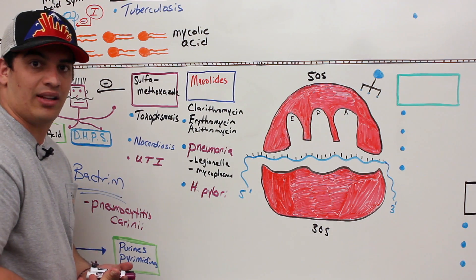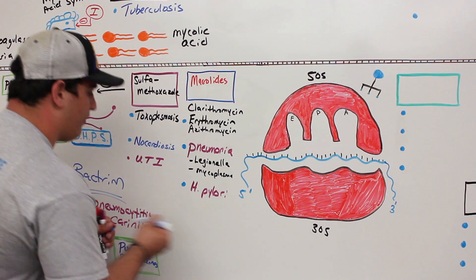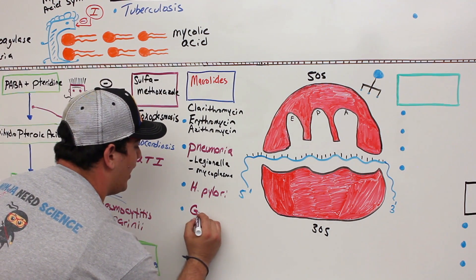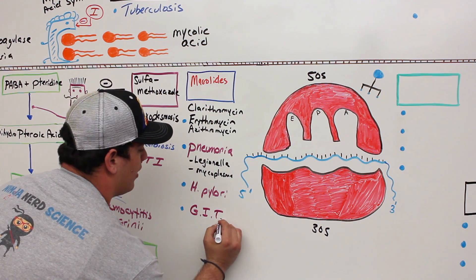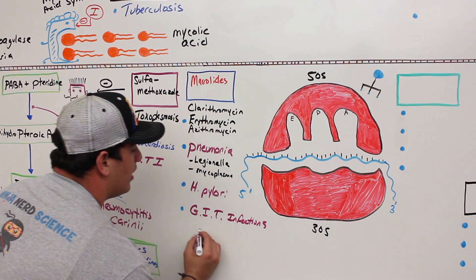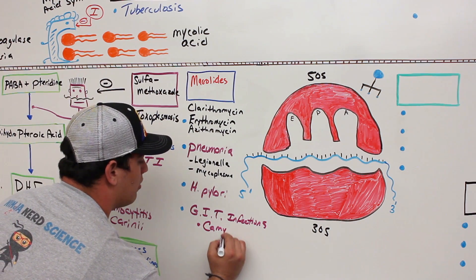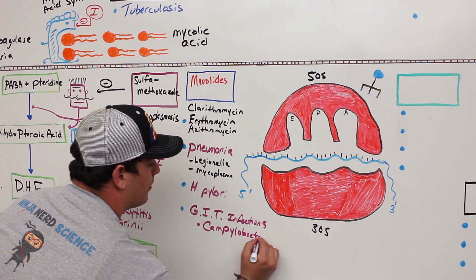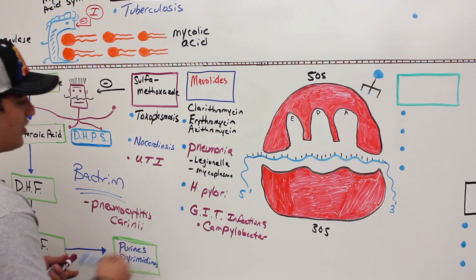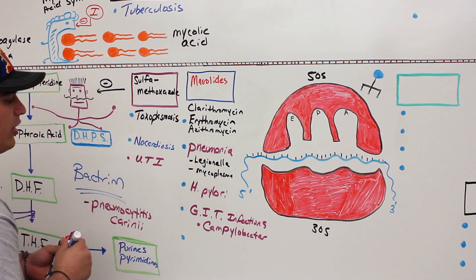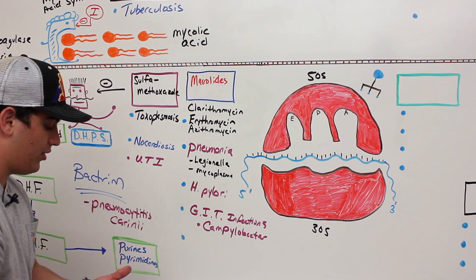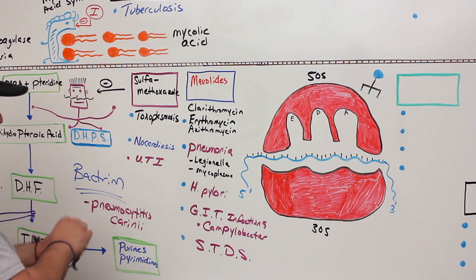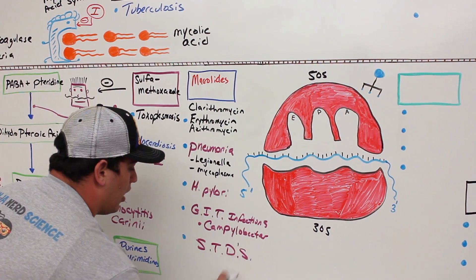Macrolides are also good for treating certain gastrointestinal tract infections — specifically GI infections caused by Campylobacter. They can also be used to treat sexually transmitted diseases, specifically chlamydia and gonorrhea.